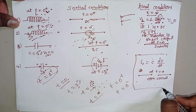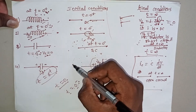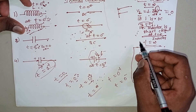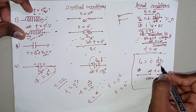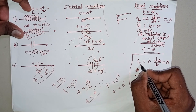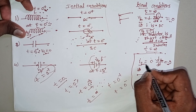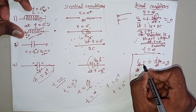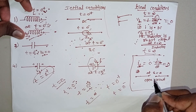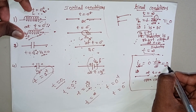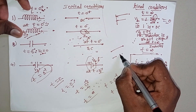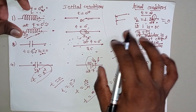For the capacitor at T = ∞, the voltage is constant. The differentiation of a constant is 0, so Ic = C × d/dt × Vc = 0. Ic = 0 means the current through the capacitor is 0, and when current equals 0, the circuit acts as an open circuit. So at T = ∞, the capacitor acts as an open circuit. To summarize: if voltage is 0, it acts as a short circuit; if current is 0, it acts as an open circuit. This covers the initial and final conditions of the inductor and capacitor.